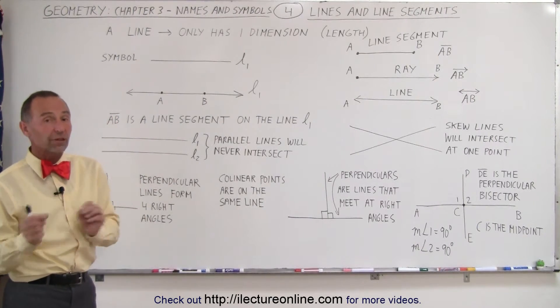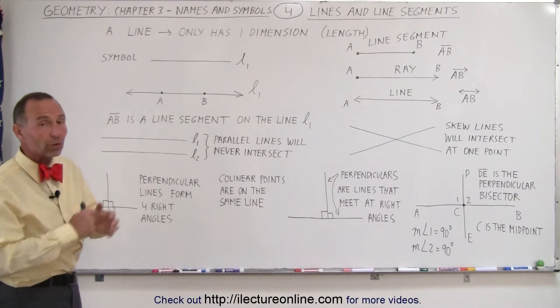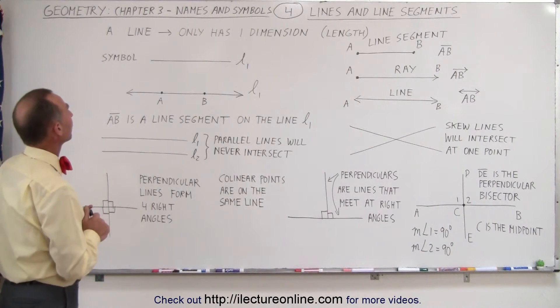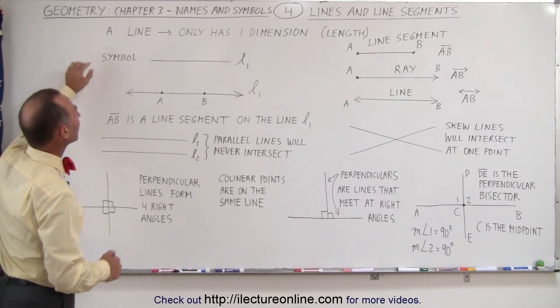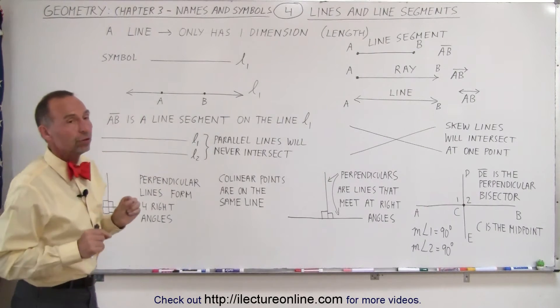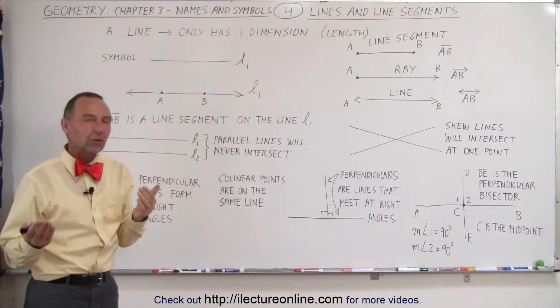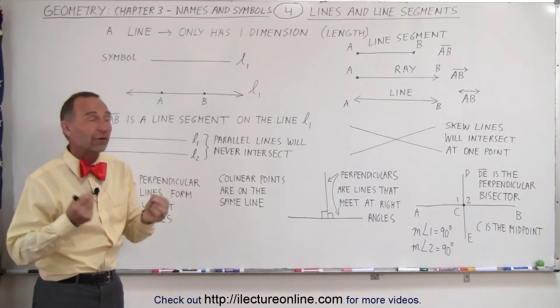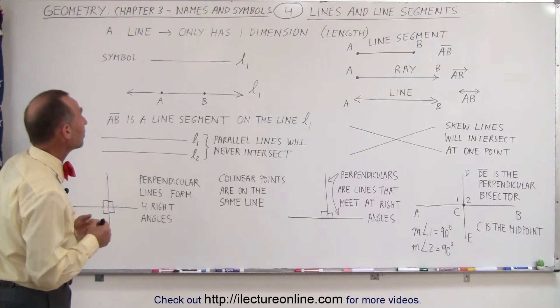And also line segments, and there's a difference between lines and line segments, and we'll see that in just a moment. A line can be defined as having only one dimension, the dimension of length. And that's why length and line are very similar words. They mean basically the same thing.